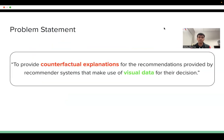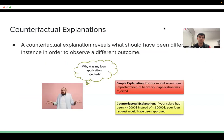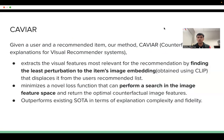We aim to provide counterfactual explanations for the recommendations provided by large-scale visual recommender systems. A counterfactual explanation reveals what should have been different in an instance in order to observe a different outcome. Our method, CAVIAR, creates a counterfactual image for an item by perturbing the original image. We try to find the minimal perturbation that we can make to the original item image such that this new item is no longer recommended to the user.